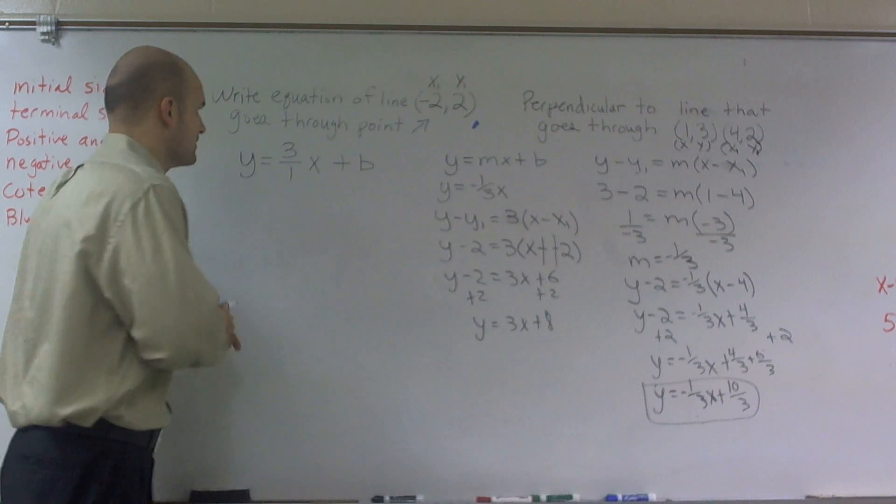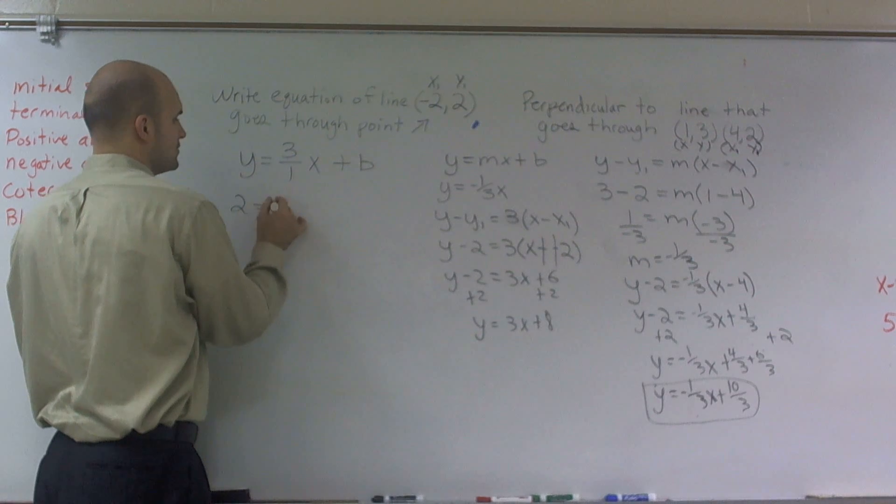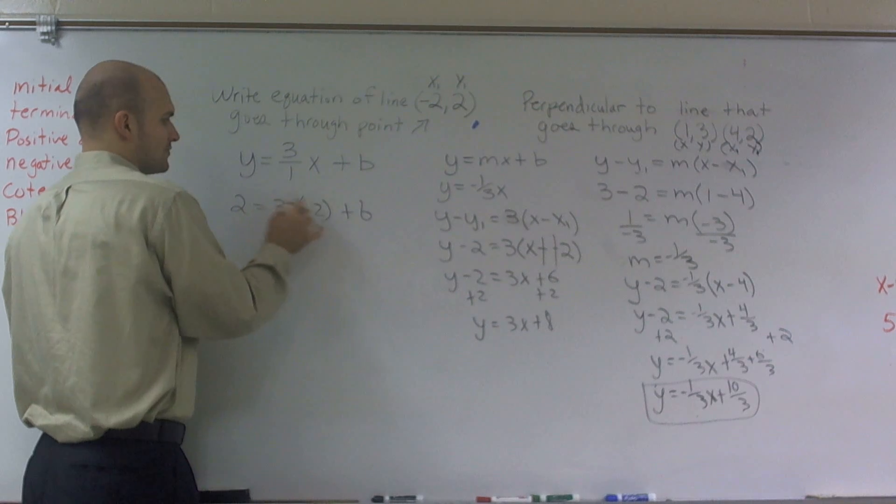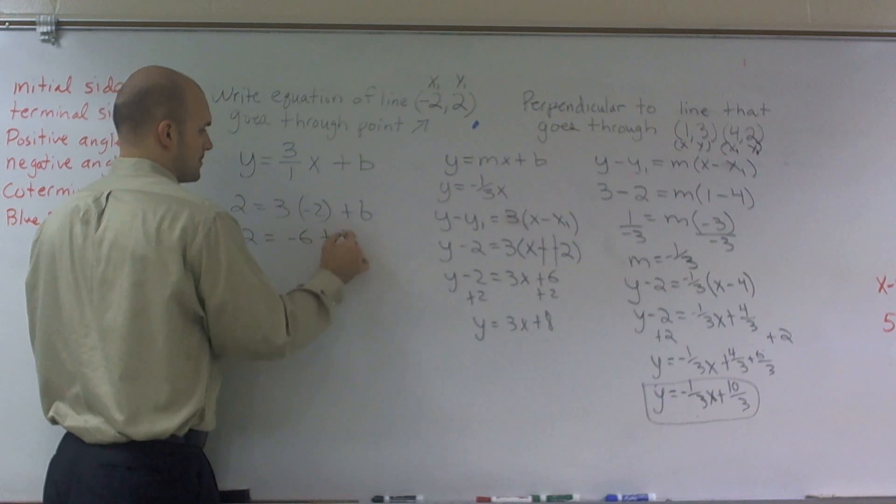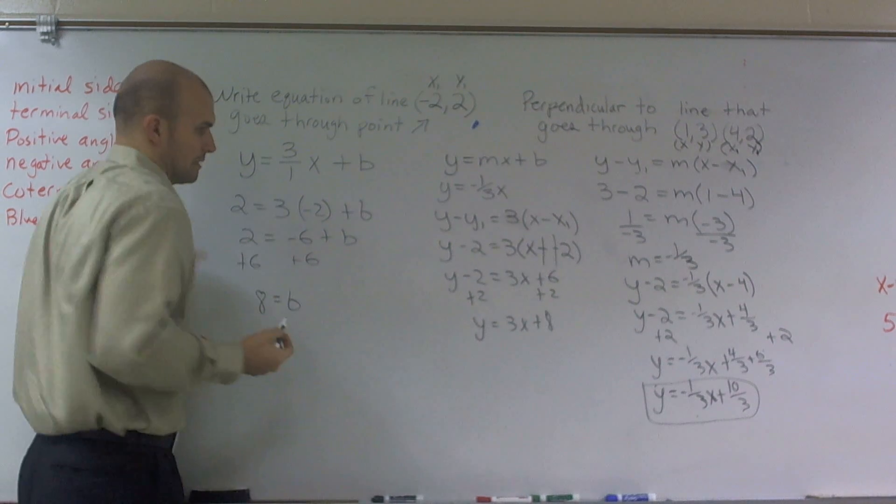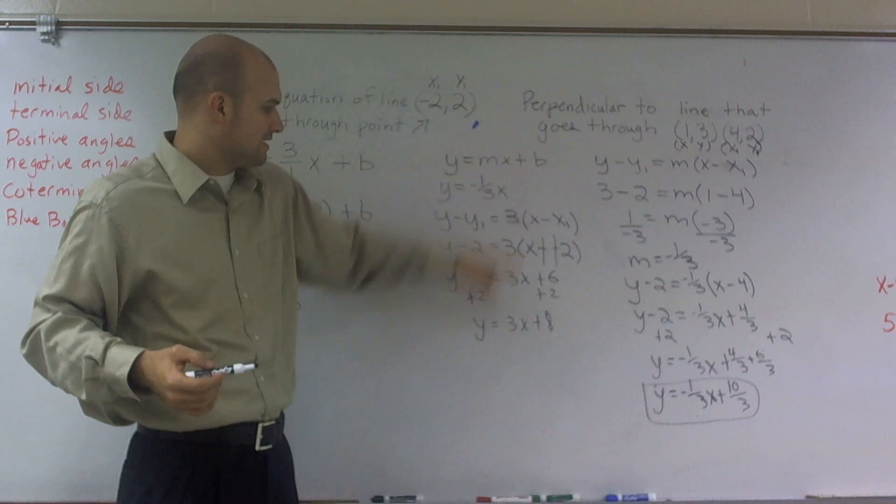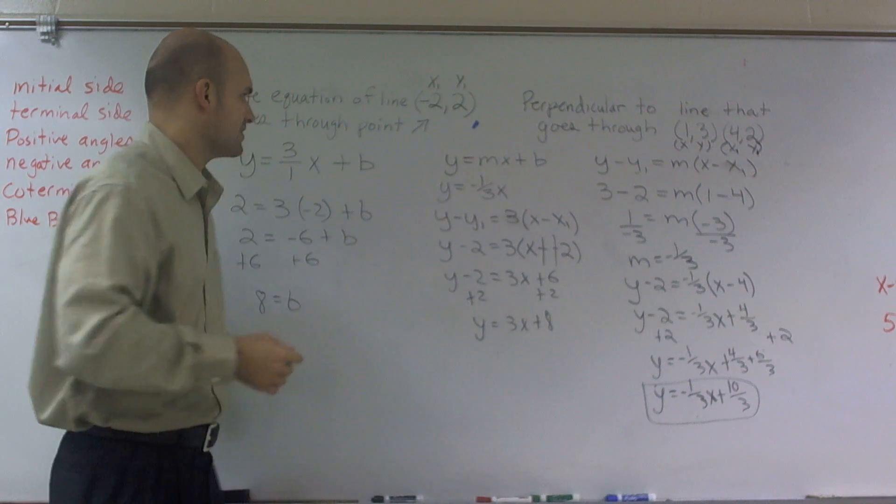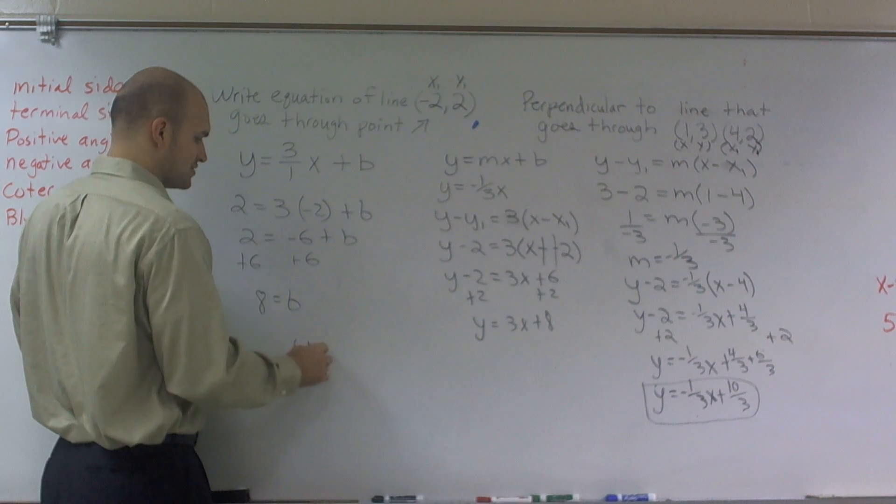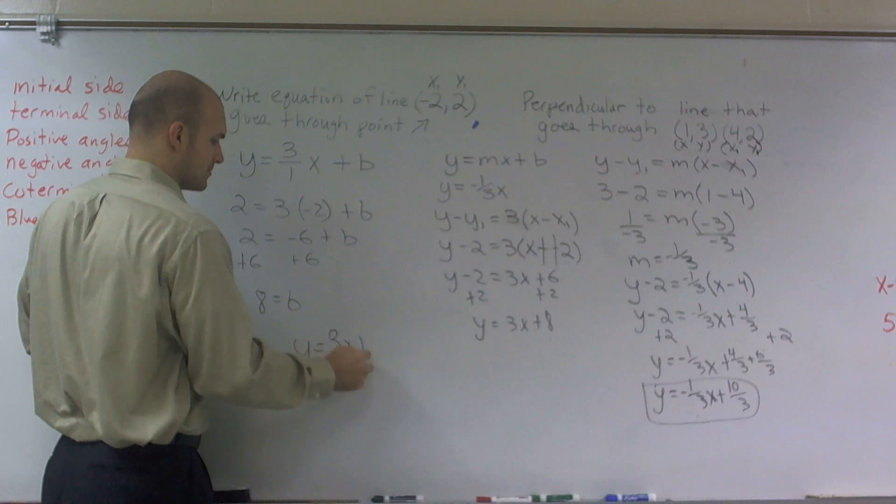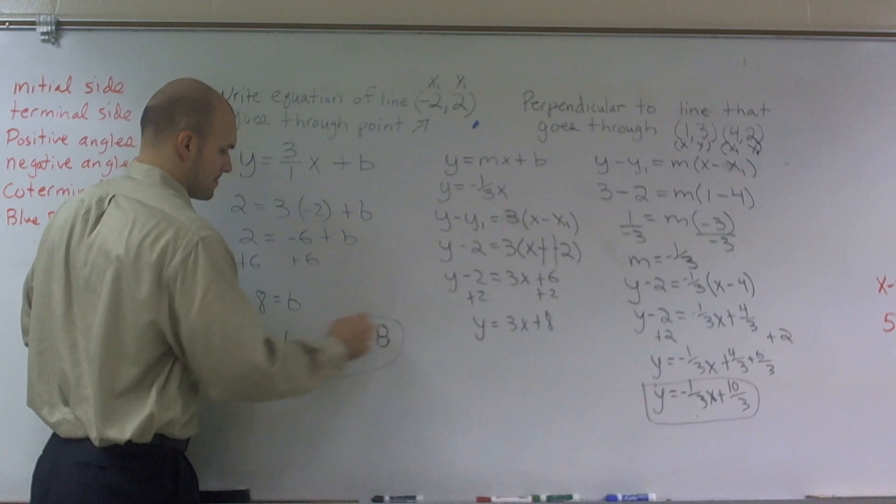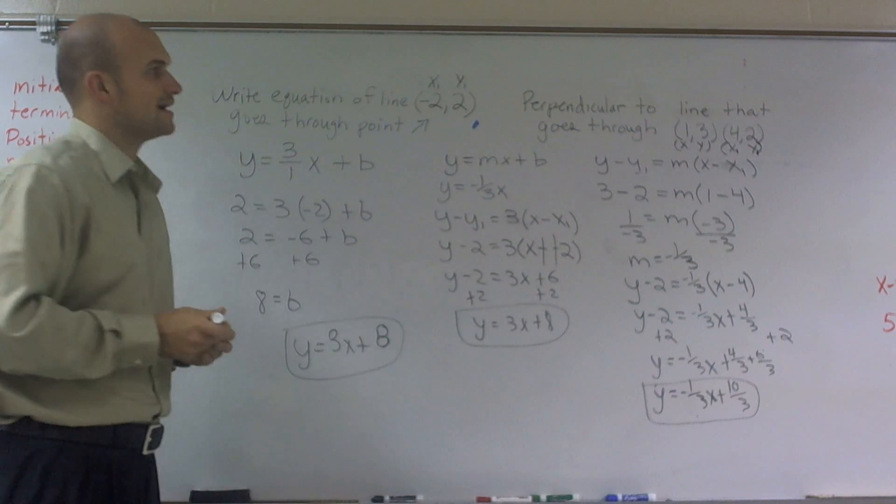If I wanted to do it this way, I'd plug these two problems in. I'd say y equals 3 times negative 2 plus b. 3 times negative 2 is negative 6. Add a 6. Therefore, 8 equals b. And again, we know that if I have 3x plus b, we know 8 equals b. So therefore, I can rewrite my new equation. My new equation is y equals 3x plus my new b.